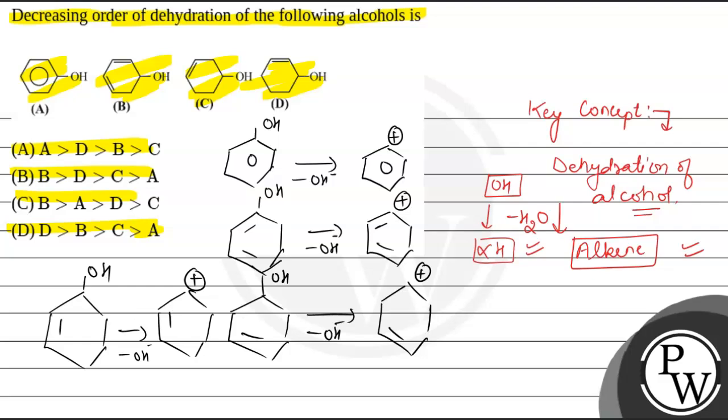So if we compare the stability of these four carbocations, the more stable the carbocation, the more will be its stability and the greater will be the ease of dehydration. So if we compare, the most stable carbocation is option B. Why is it so?